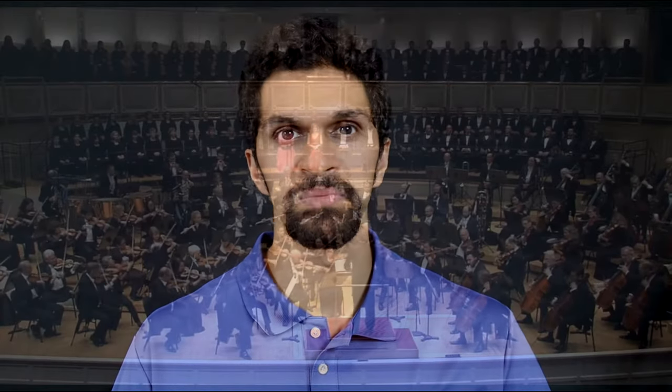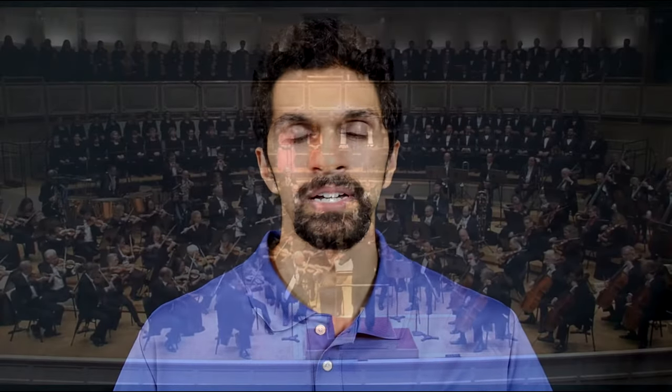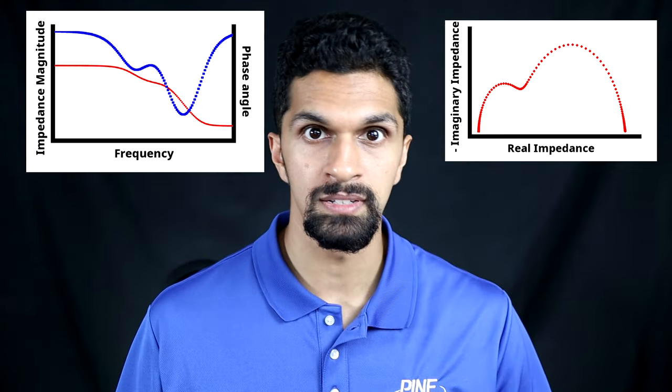To relate this back to the symphony analogy: DC voltammetry is like listening to the music — you're hearing beautiful music, but you have a hard time telling what instruments are being played. With EIS, we're trying to describe these complex electrochemical phenomena with impedance from the Bode and Nyquist plots.